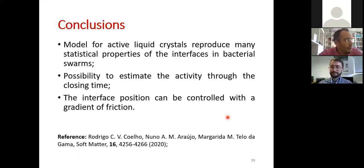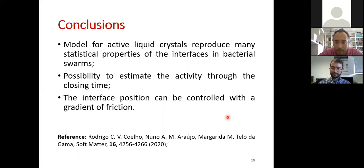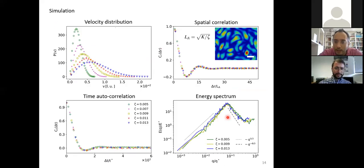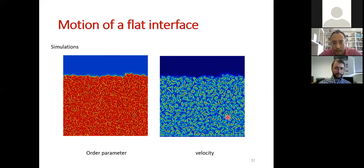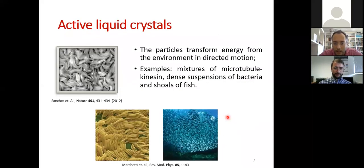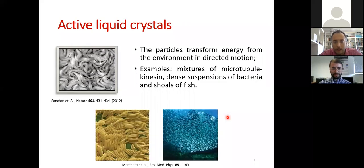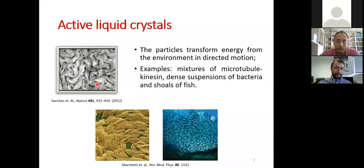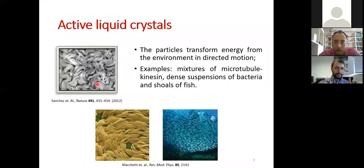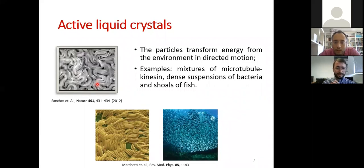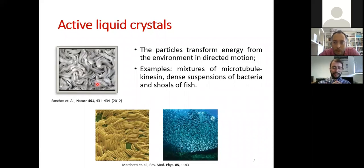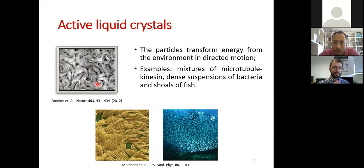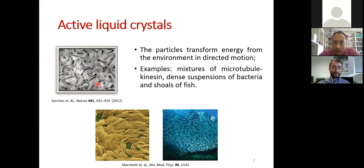Q&A: Is there a characteristic Reynolds number to have active turbulence? No — active turbulence typically develops at low Reynolds numbers, which is the key difference from classical turbulence. This is a mesoscopic system: the vortices are around 10 micrometers and velocities are not high, but the system is very chaotic. The Reynolds number is typically much lower than one.